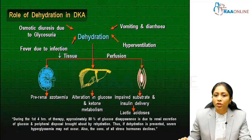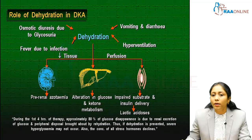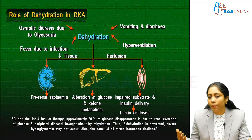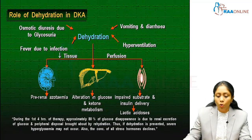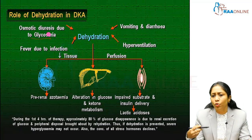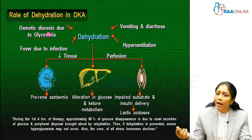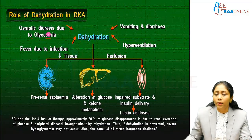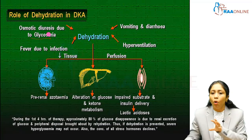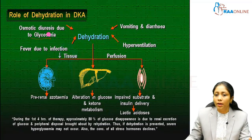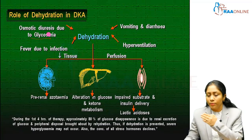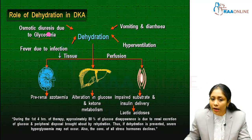Dehydration is a very important pathogenic process that drives DKA and its complications. On one end, osmotic diuresis occurs due to glycosuria; on the other, the patient develops vomiting — caused by ketones — and diarrhea from hypermotility of the gut. Additionally, the patient may be septic, hyperventilating, or have an infection. All this leads to gross dehydration and poor tissue perfusion affecting vital organs such as the kidney, liver, and peripheral muscles.